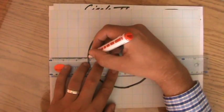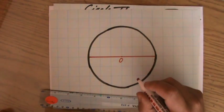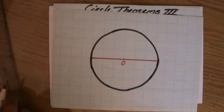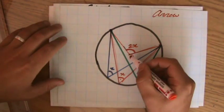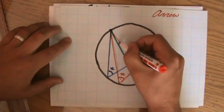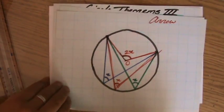And how do we call that line then? We call that the diameter. Okay. And what did we say? Again, going back to the previous video, what did we say? Well, if I have a radius and a radius, then this angle is twice as big as the angle there at the circumference.